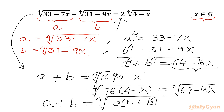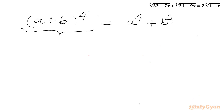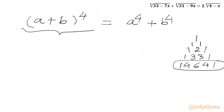Raising both sides to the power 4: (a plus b)⁴ equals a⁴ plus b⁴. We use Pascal's triangle for the expansion. For power 2 the coefficients are 1 2 1; for power 3, 1 3 3 1; and for the required power 4, the coefficients are 1 4 6 4 1. Grouping the like coefficients, the expansion of (a+b)⁴ begins with a⁴ plus b⁴.